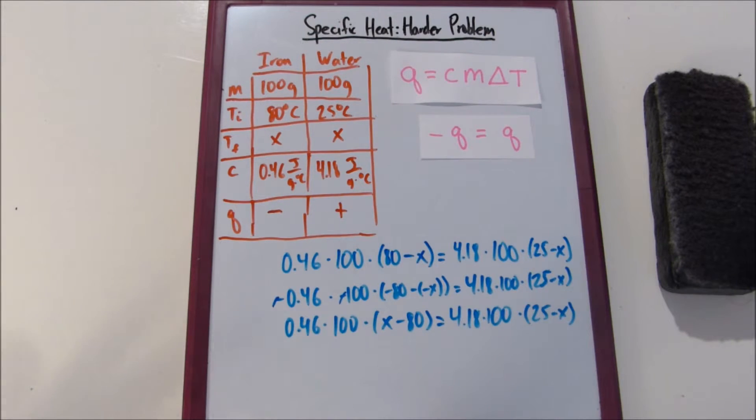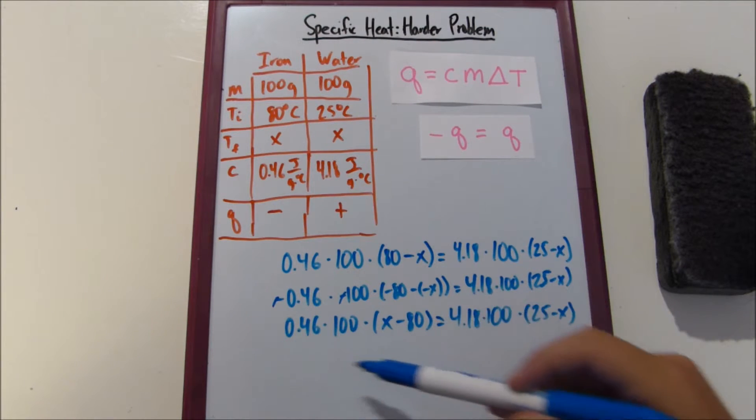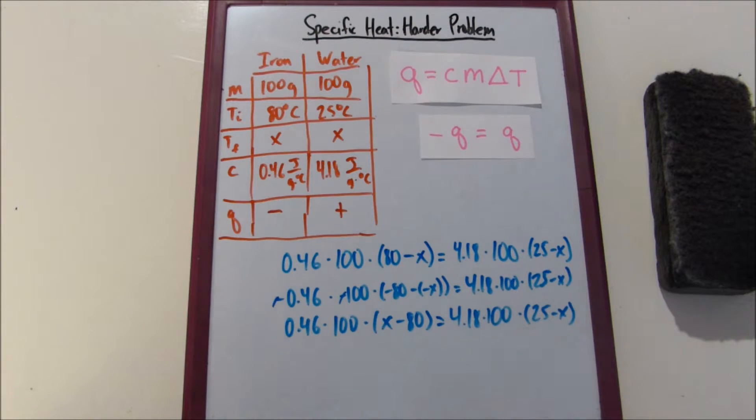Equals 4.18 times 100 times 25 minus X. All right, so now we've simplified it a little bit. So now what we're going to want to do is we're going to want to simplify it even more. So we're going to multiply stuff across. It's going to be fun.